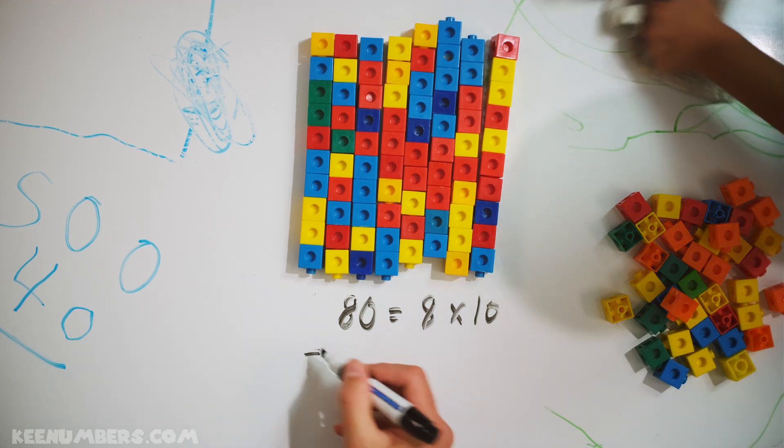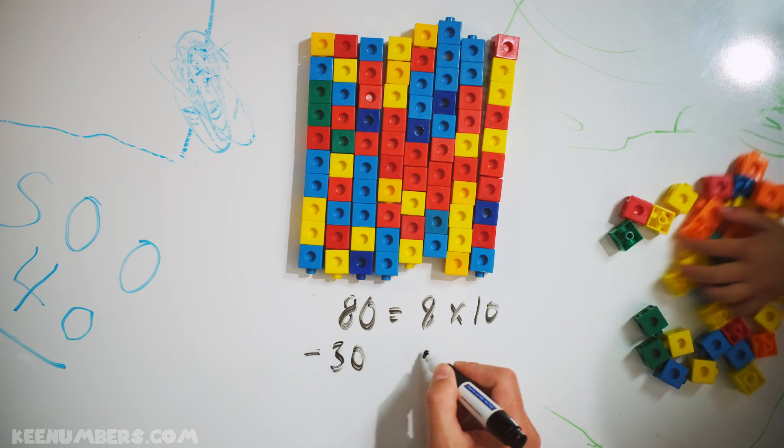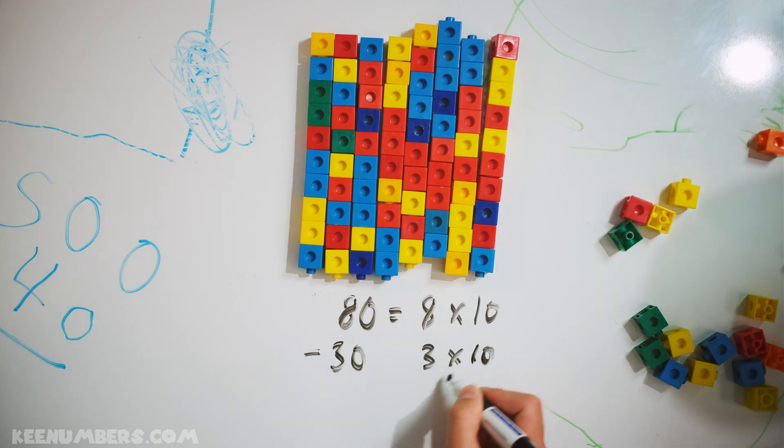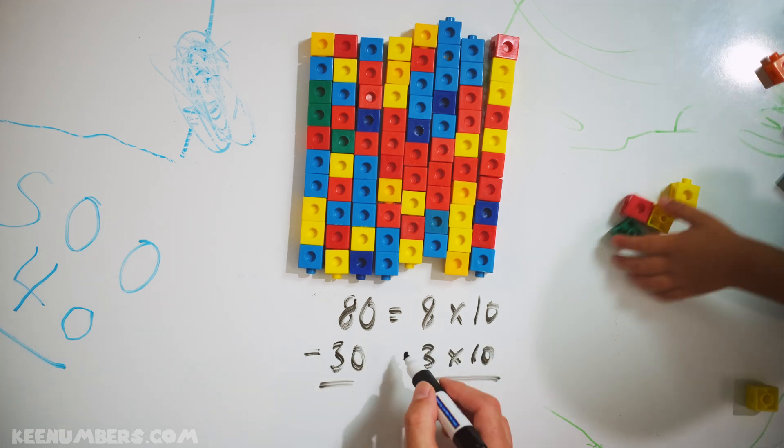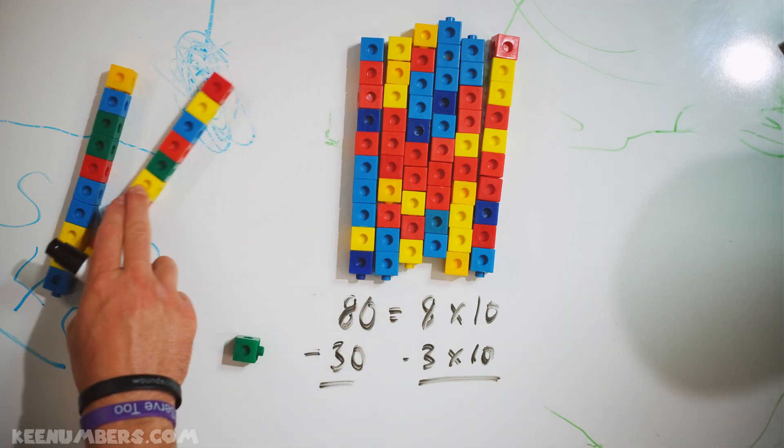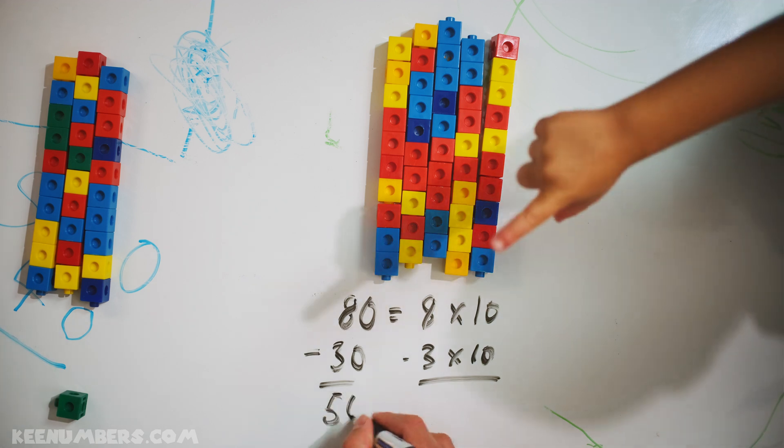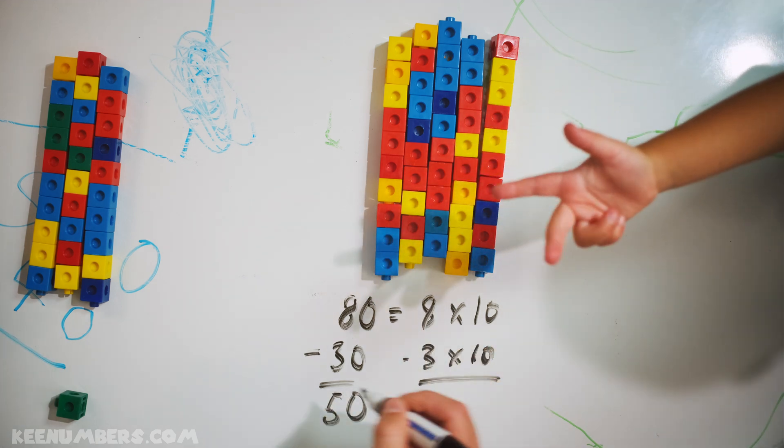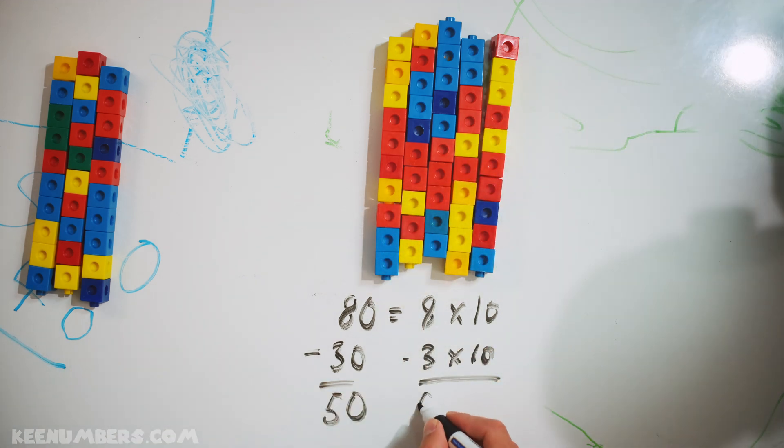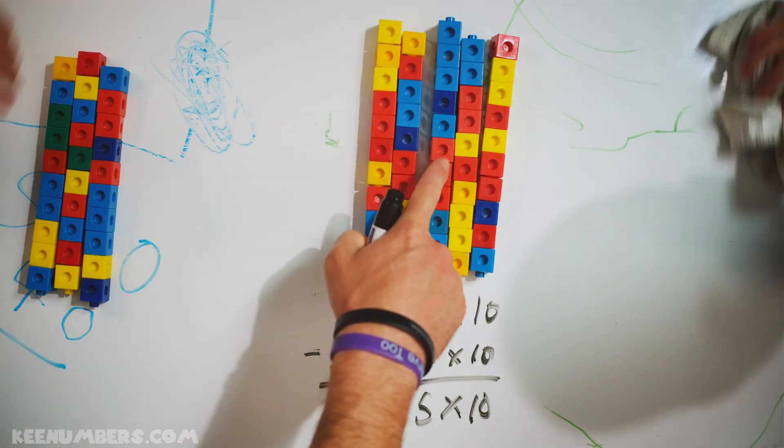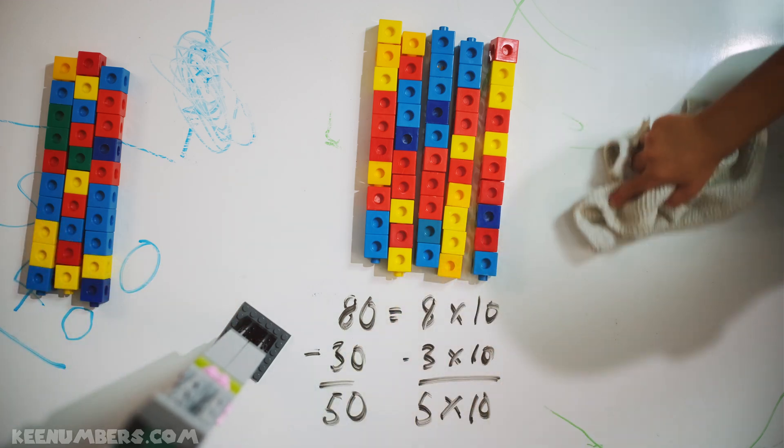We're going to subtract 30. 80 minus 30. That's 3 stacks of 10. 80 minus 30, that's 50. Boop. Boop. Boop. Boop. 1, 2, 3, 4, 5. 50. Hezzy is right. 50. 8 minus 3 is 5. That's why 50 is so easily illustrated by 5 stacks of 10.